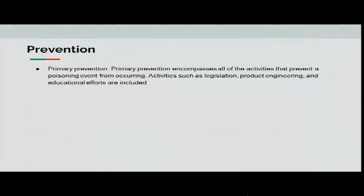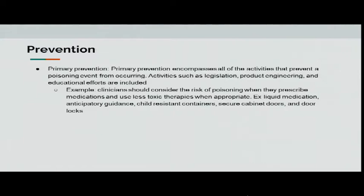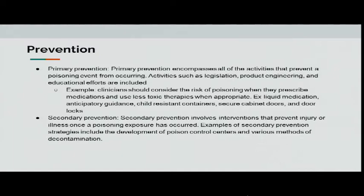Primary prevention encompasses all activities that prevent a poisoning event from occurring — legislation, product engineering, and educational efforts. Clinicians should consider the risk of poisoning when prescribing and use less toxic therapies when appropriate. A key example: always clarify the exact dose of liquid medication for parents. If a mom says she gave her child Tylenol but doesn't know how much, mark the syringe. A lot of calls to poison control are parents asking if they gave too much Tylenol. Letting the mother know before leaving the clinic how much is appropriate — and when to call — is important. Other examples of primary prevention include child-resistant containers, secure cabinet doors, and locks.